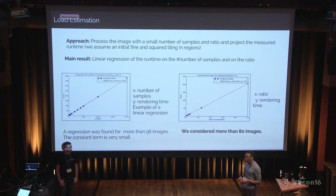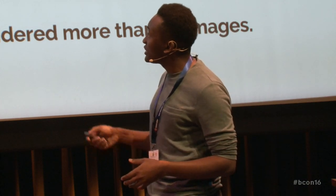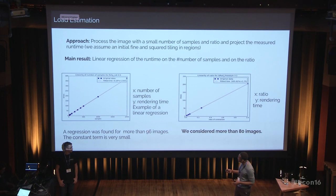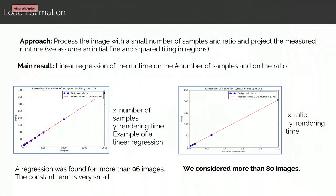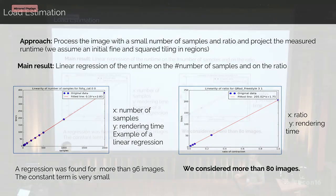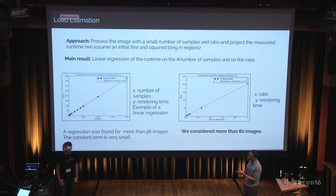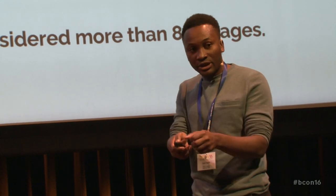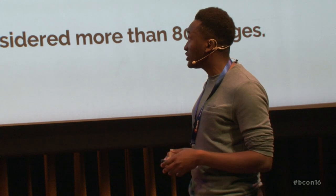We proposed this idea and started to test whether it's even meaningful — that is, can we really say that the number of samples has an impact on the runtime? When we considered a subset of about 96 images, we found that if you change the number of samples, you can fit a linear regression model showing how runtime is linearly correlated with the number of samples used. We also found another linear regression when considering the number of ratios. The database may not be fully representative of all image types, but these results suggest that a rendering with few samples can effectively provide an estimation usable for finding the best way to decompose the image.